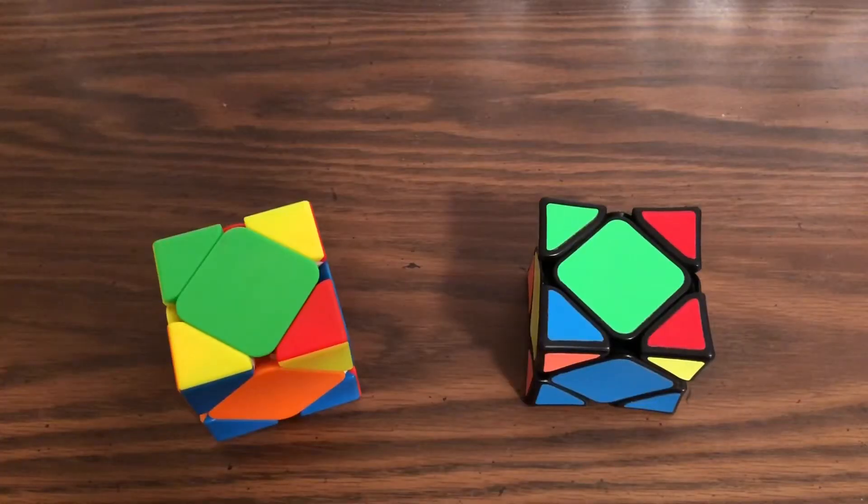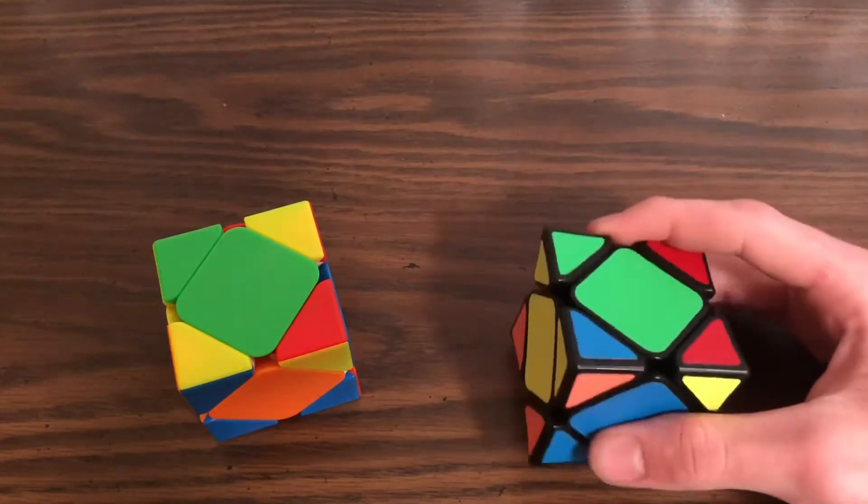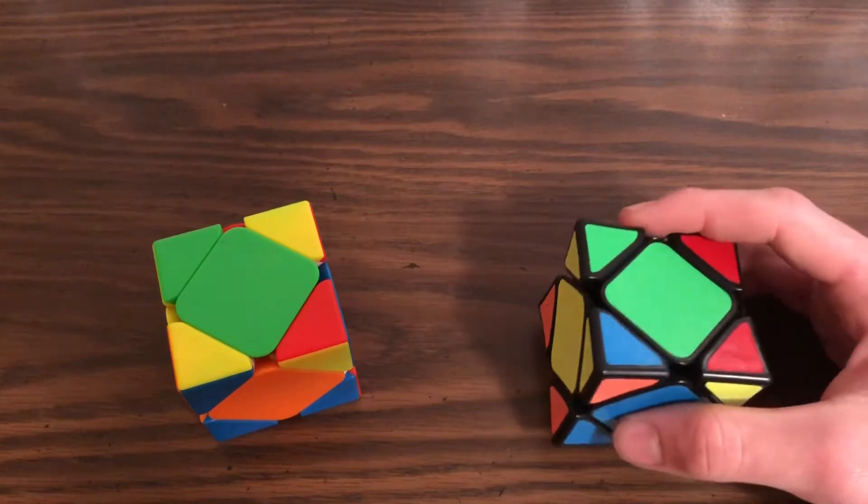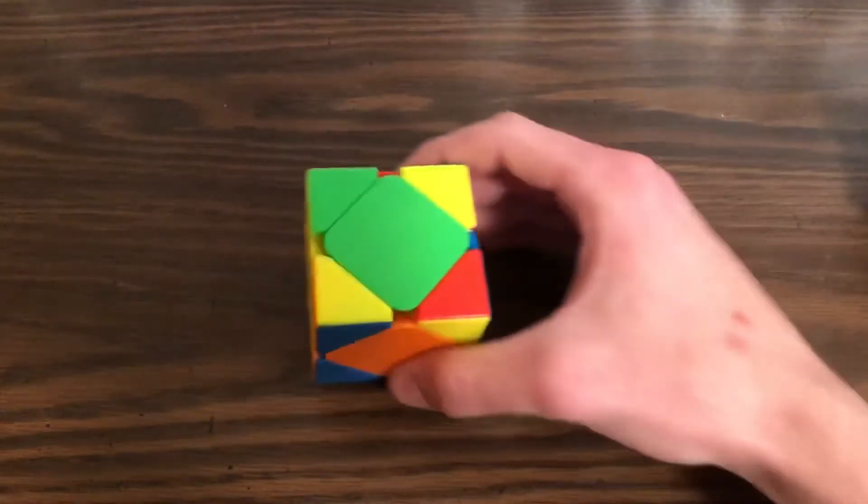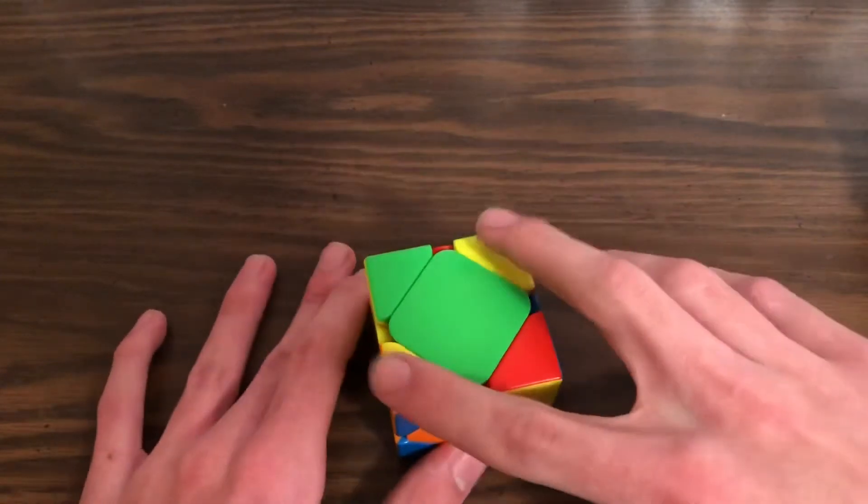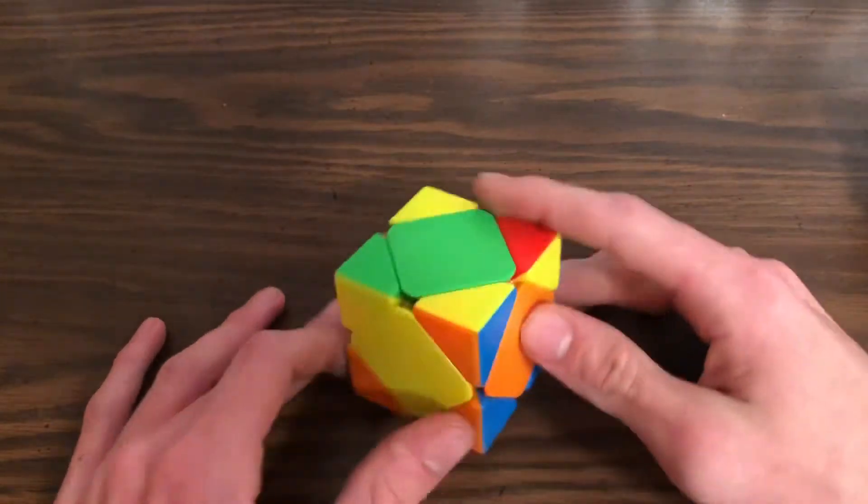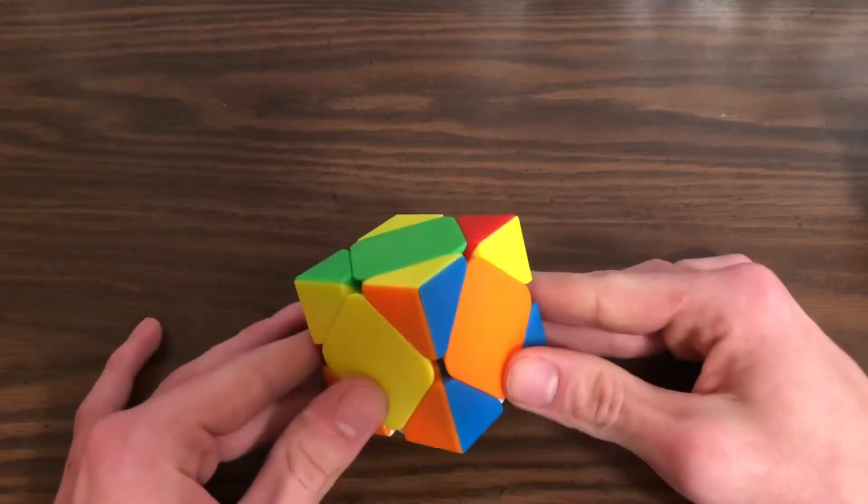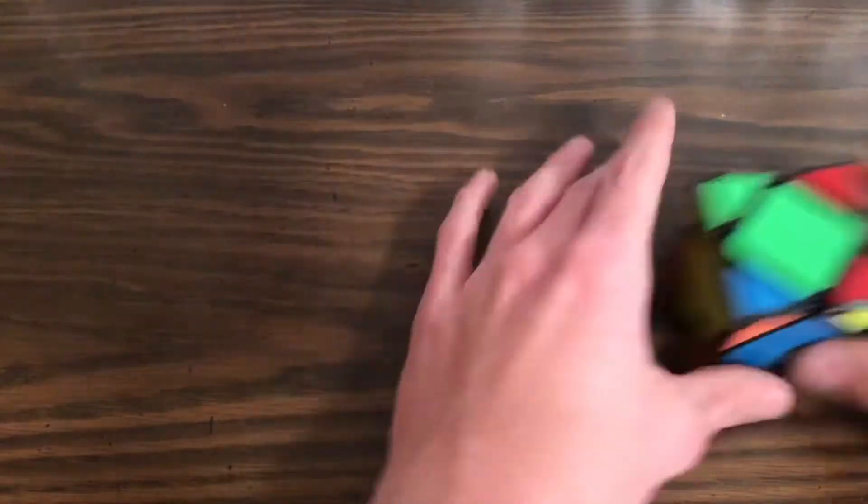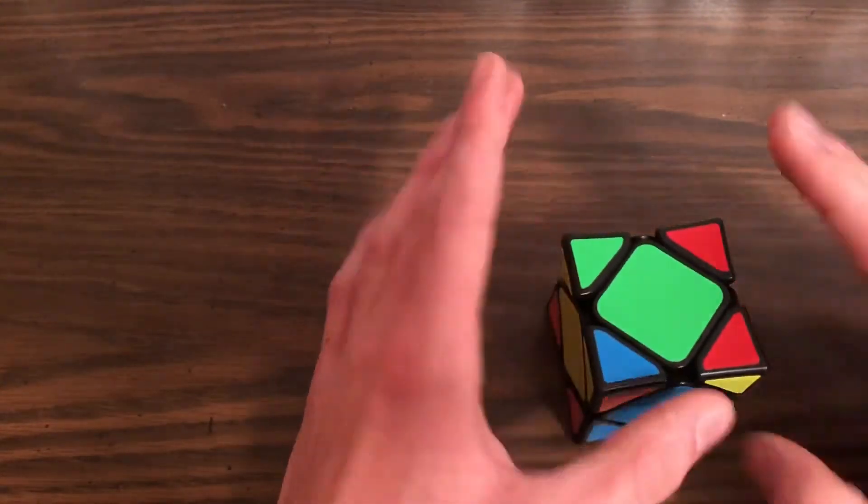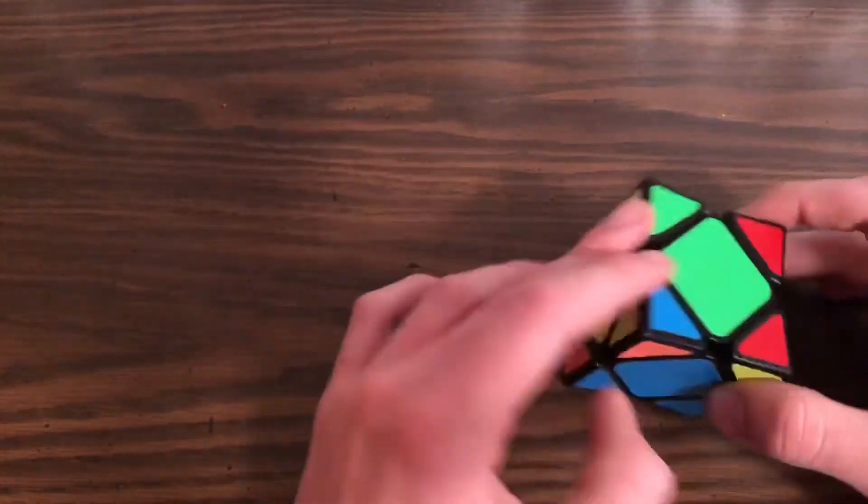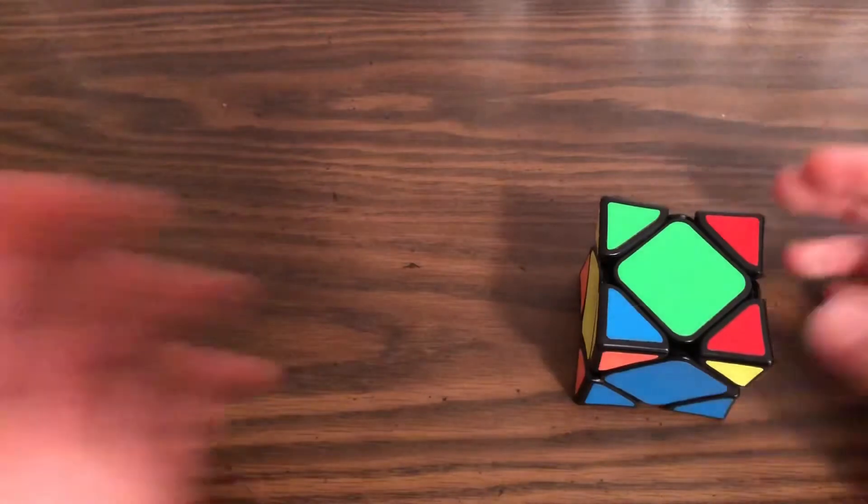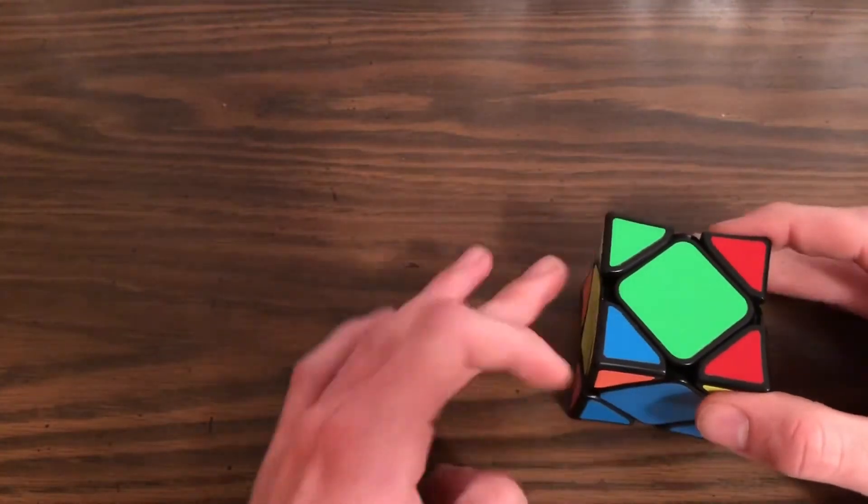The second step in solving this cube is orienting the top corners. And there are two possible cases you can get for this stage. The first, and harder to solve, is where you have two corners at a diagonal and two facing out like this. The second case is where you have none facing on top. You have two headlights facing any direction really and then you have opposites. In this case, my headlights are to the left.